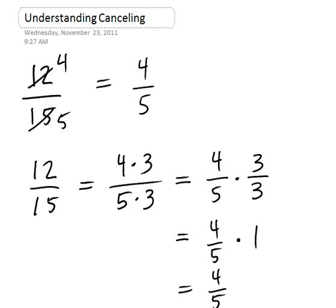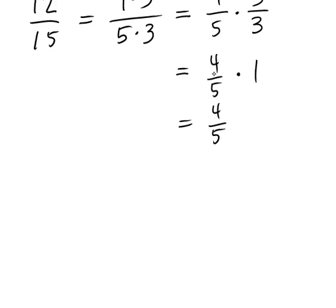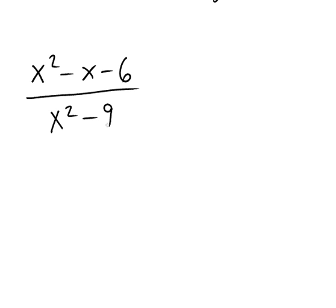Let's carry over this idea to some algebraic examples. Suppose you had to reduce this fraction, x squared minus x minus 6 over x squared minus 9. Now you actually cannot cancel anything right now. A very common mistake students make is to simply look for something in the numerator that matches something in the denominator and cross it out, like those x squareds. Those don't actually cross out because you cannot go through those steps we did earlier.